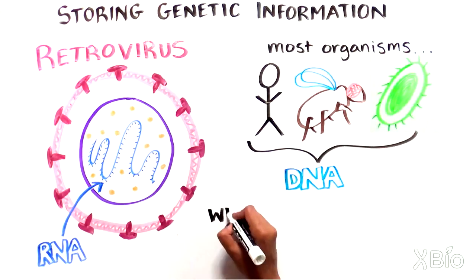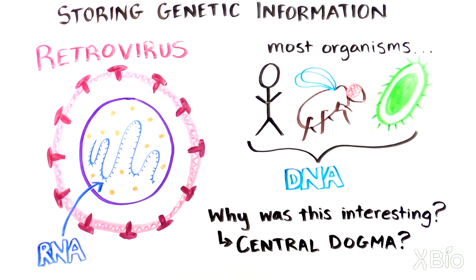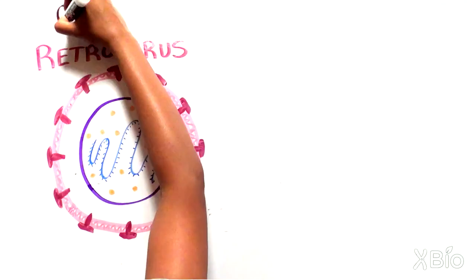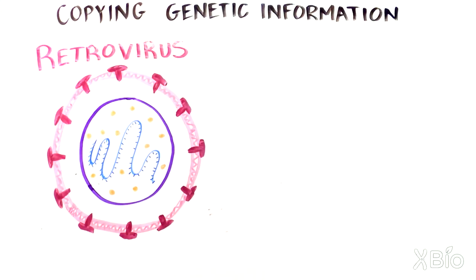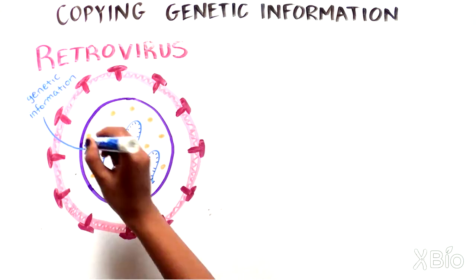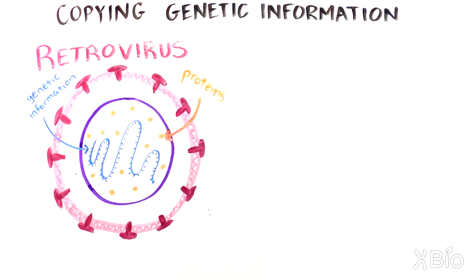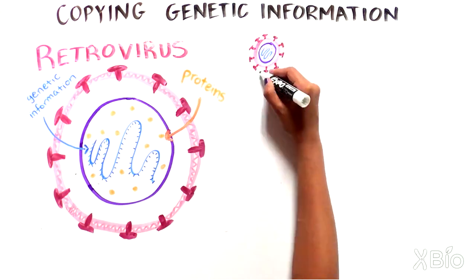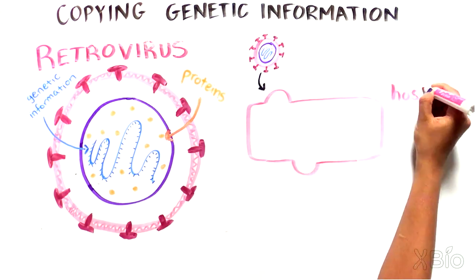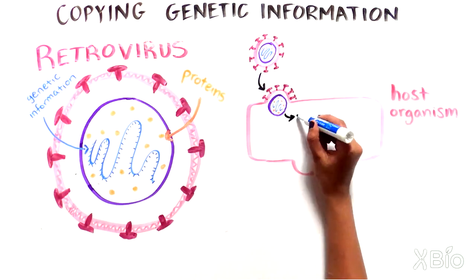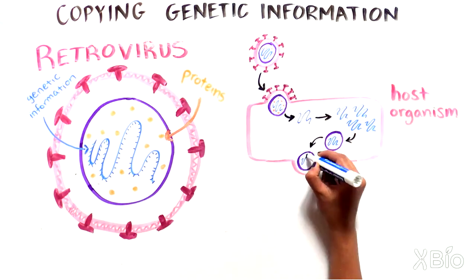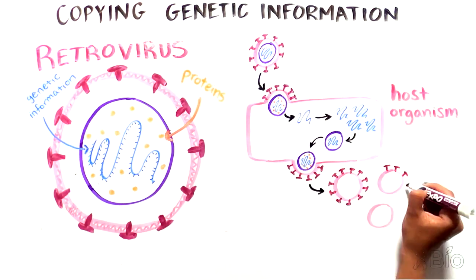Why was this interesting to scientists and how did it lead to their questioning of the central dogma? Let's first talk about retroviruses. Retroviruses are small particles that consist of genetic information and a few proteins inside a capsule. These viruses need to be inside the cell of another host organism to replicate. Once inside, viruses copy their genetic material to form many more viruses.